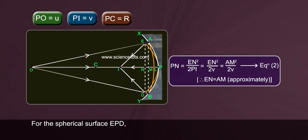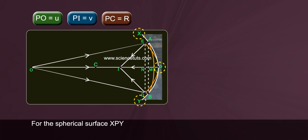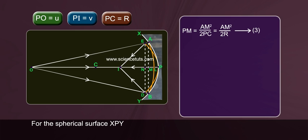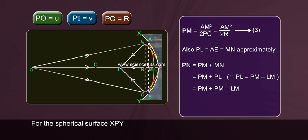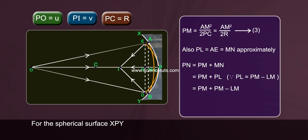Therefore EN equals AM approximately. For the spherical surface: PN equals AM squared by 2R — Equation 3. Also, PL equals AE equals MN approximately. PN equals PM plus MN equals PM plus PL. Since PL equals PM, we get PM plus PM minus LM, and therefore PN plus LM equals 2PM — Equation 4.